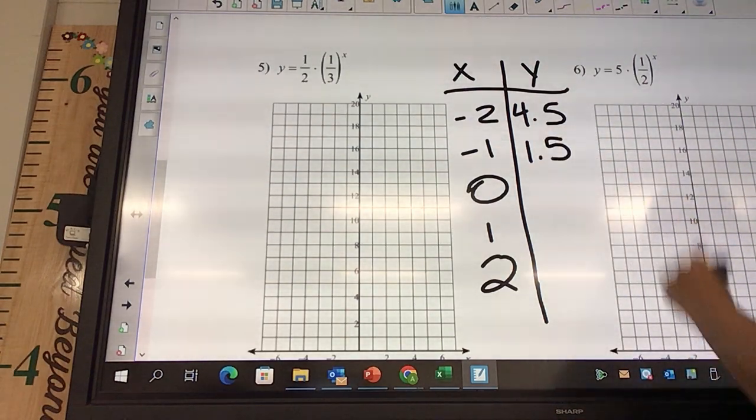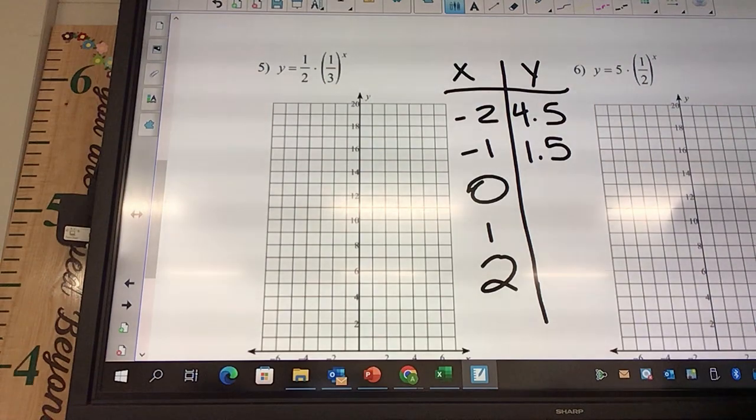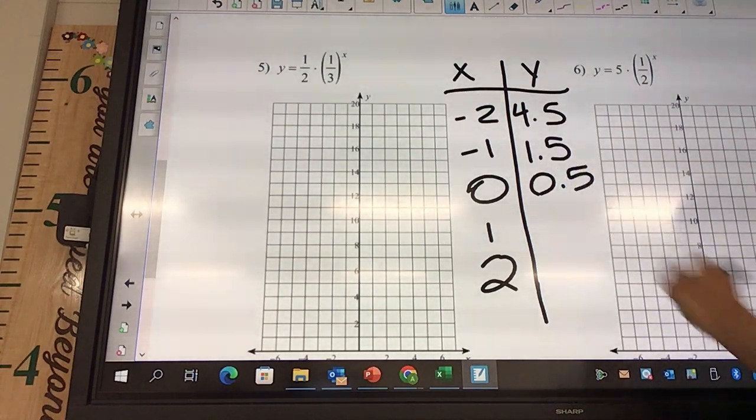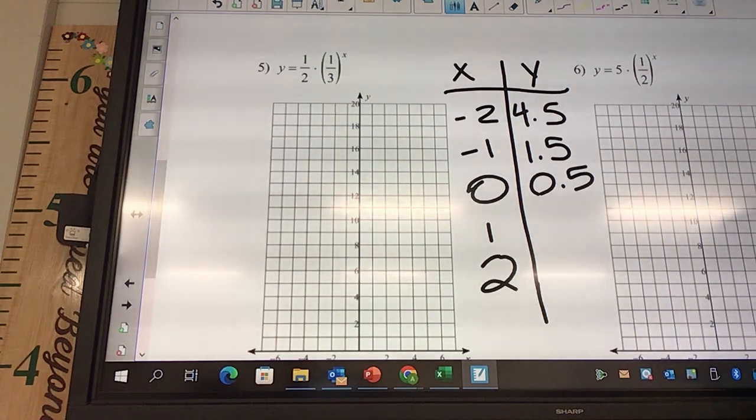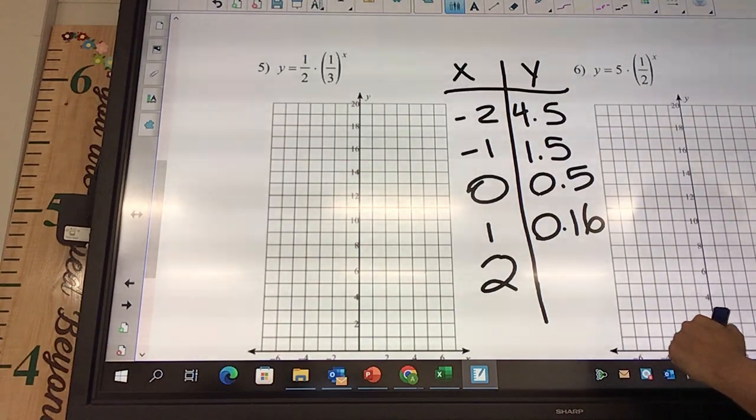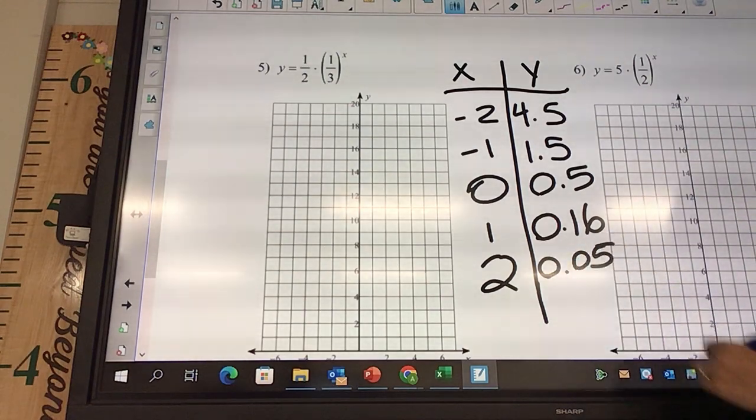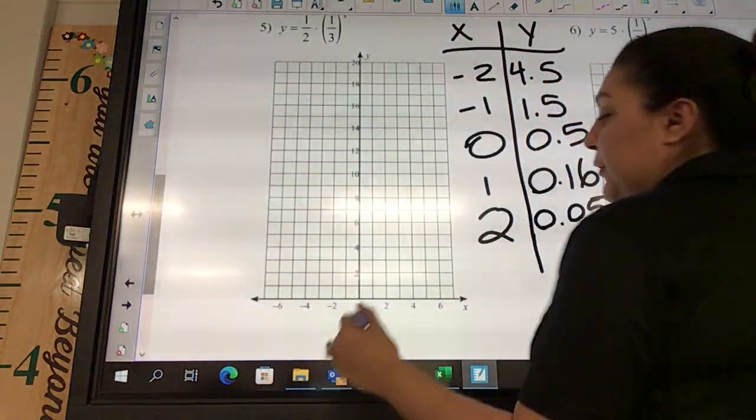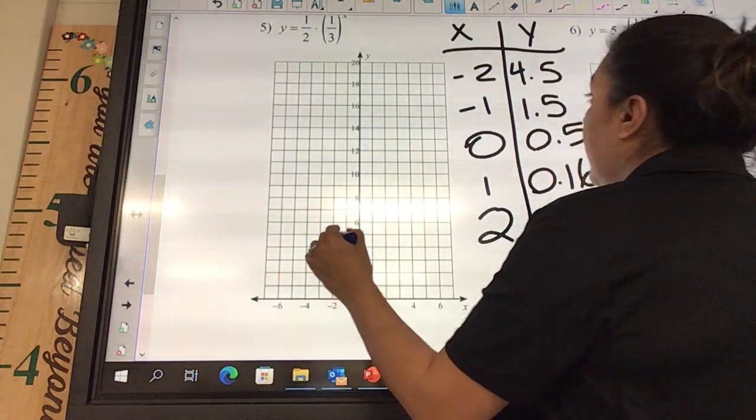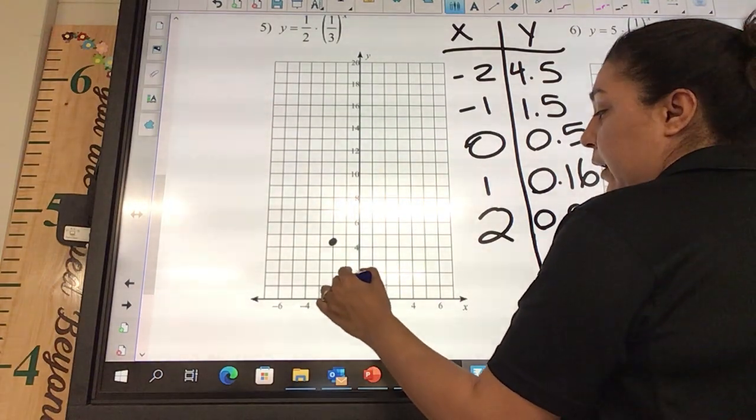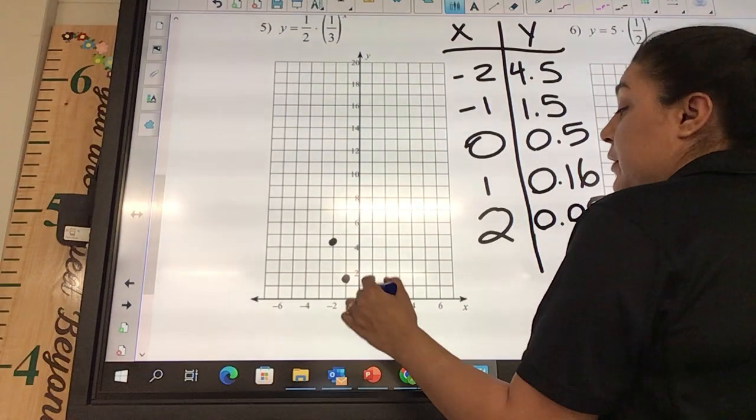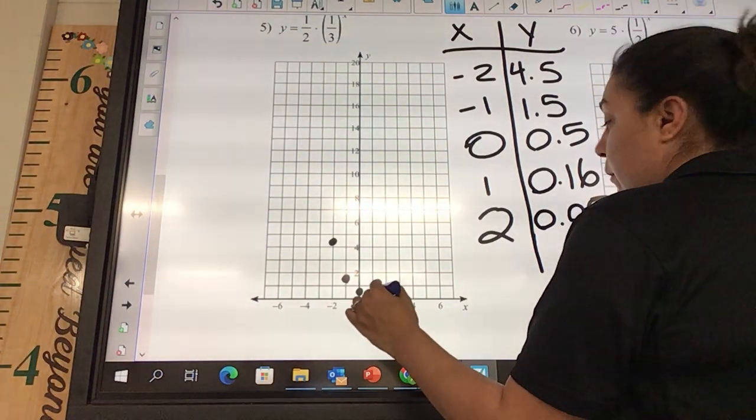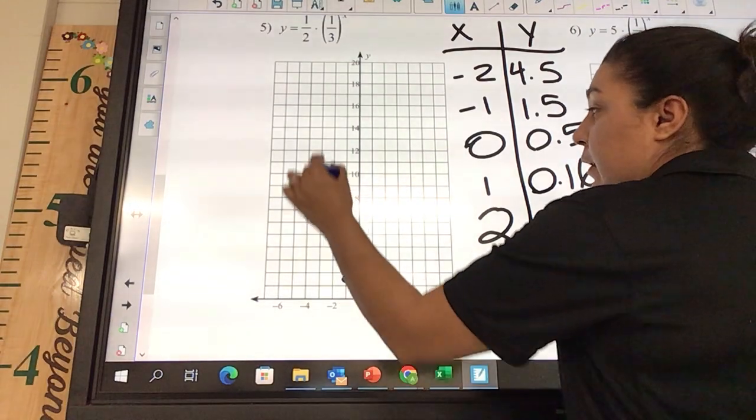1.5. 0.5. 0.16. 0.05. Working on the other side. You need to slip. You're typing the next one. All right.